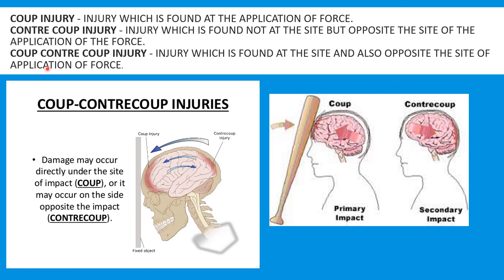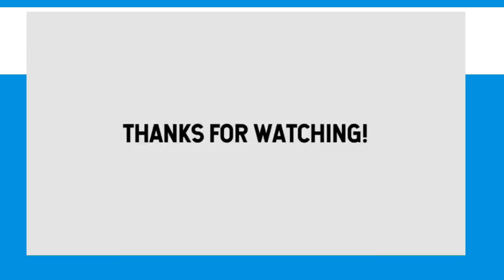Difference between coup injury, contrecoup injury, and coup-contrecoup injury: A coup injury is the injury found at the side of the application of force. A contrecoup injury is found not at that side but at the opposite side. A coup-contrecoup injury is found at both the side of impact and the opposite side.